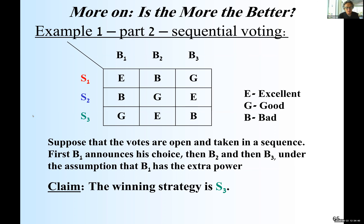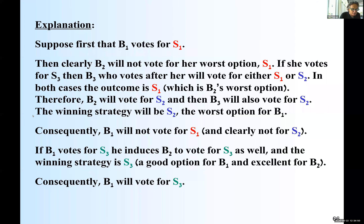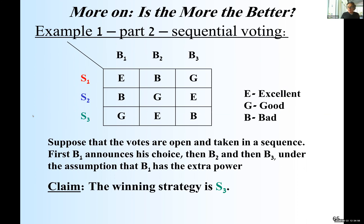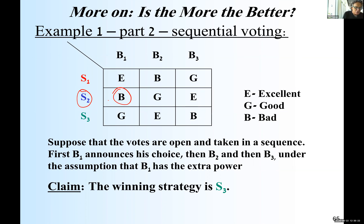So the question is, how do we get there? B1 starts, so I want to know what B1 should announce. He's not going to announce S2 because S2, if selected, is really bad for him. So he can select either S1 or S3, but he has to take into account how this is going to trigger the reaction of B2 and B3. Let's start with the best for him, which is S1.